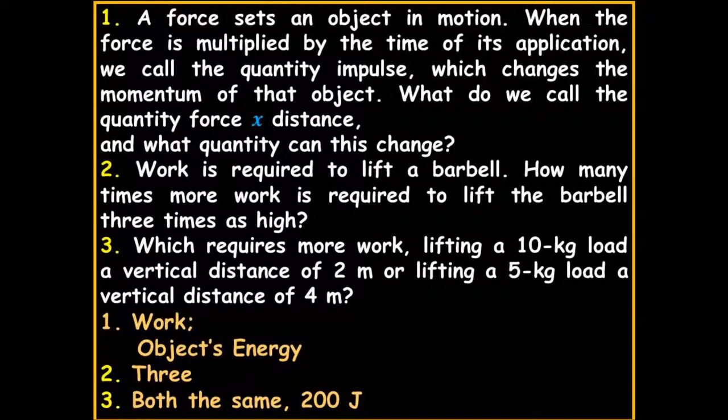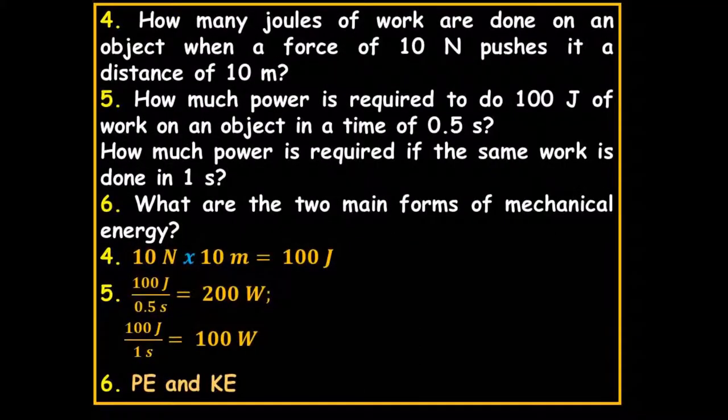Which requires more work: lifting a 10-kilogram load a vertical distance of 2 meters, or lifting a 5-kilogram load a vertical distance of 4 meters? Force times distance: 10 times 2 is 20, and 5 times 4 is 20. It looks different but it is actually the same — both equal 200 joules.